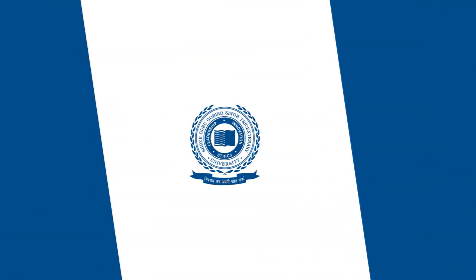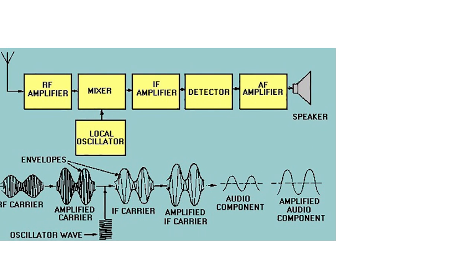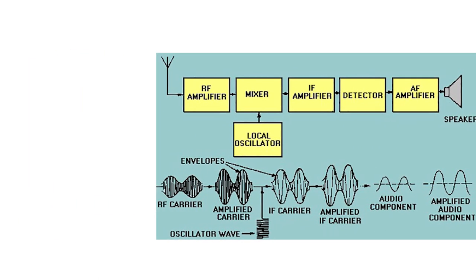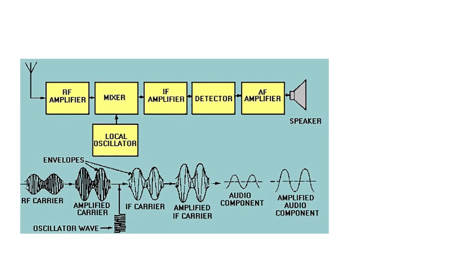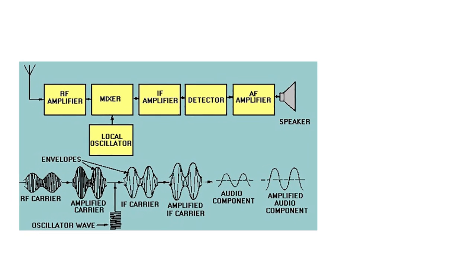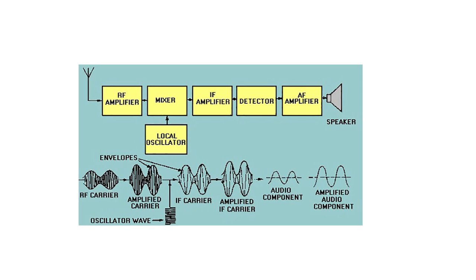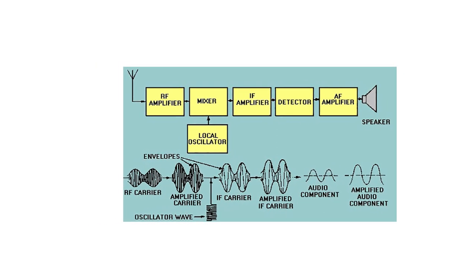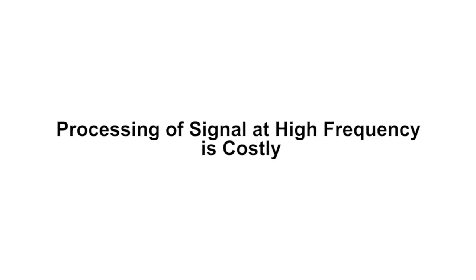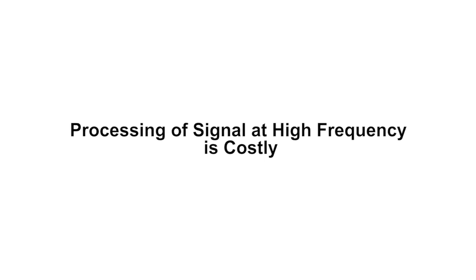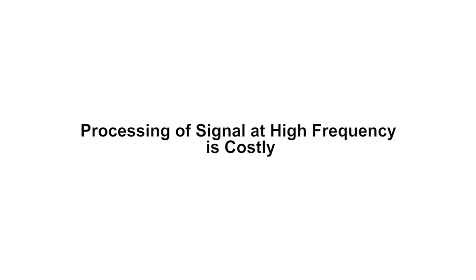Now, let us discuss Super Heterodyne Receiver and its working principle. I will first discuss about basics of Super Heterodyne Receiver, after that the block diagram of Super Heterodyne Receiver. Since at high frequency, processing of a signal is very costly, thus we need to process the signal at low frequency. Hence, we need to convert high frequency signal into low frequency signal.